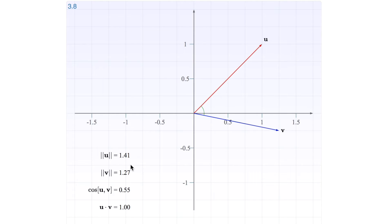So in this example, we have the length is 1.41 and the length of the other one is 1.27, and the angle between these two has a cosine value of 0.55. If you multiply all these, you get 1.00.